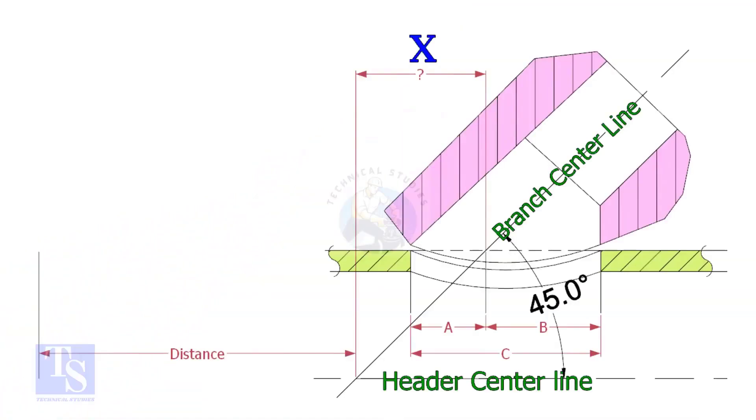Most commonly, laterolets are used for 45-degree branch connections. In a drawing, the distance to the center of a laterolet is given from a certain point. This distance is actually on the center of the header pipe. By applying a simple calculation, we can find the actual center that comes on the top of the pipe.